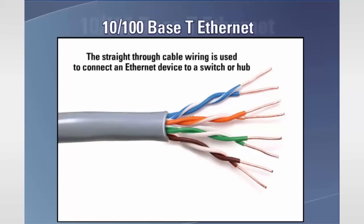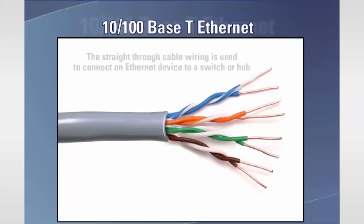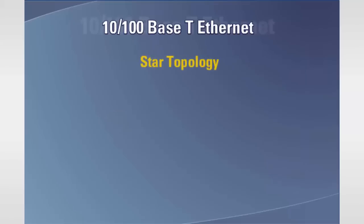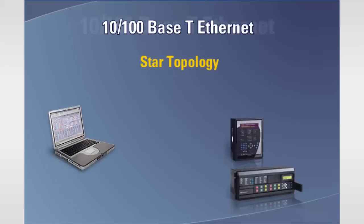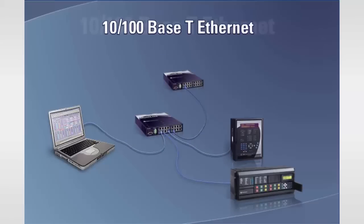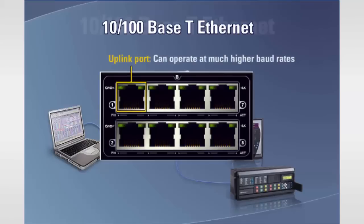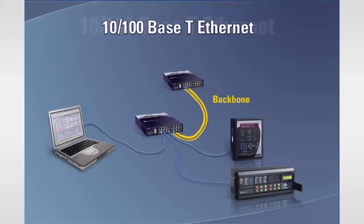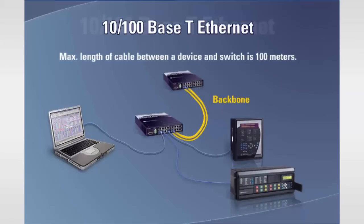The straight-through cable wiring is used to connect an Ethernet device to a switch or hub. The patch or crossover cable is used to establish a point-to-point Ethernet LAN between two Ethernet devices. The 10/100BASE-T topology is a star topology, where each device on the Ethernet LAN branches out from a central switch or switches that have been connected together to form the backbone of the network. The port that connects one switch to another is often called the uplink port. The maximum length of cable between a device and the switch is 100 meters. All components used in a 10/100BASE-T LAN should be rated with the Category 5 Enhanced Level of Quality Assurance.